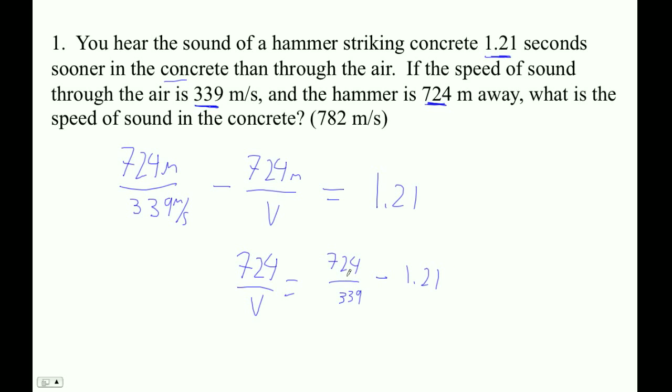Well, let's just figure it out here. So 724 divided by 339, then I'm going to subtract 1.21. This is like higher math, right? It can't be figured out. Okay, so when I do this thing here, I get 0.92569.